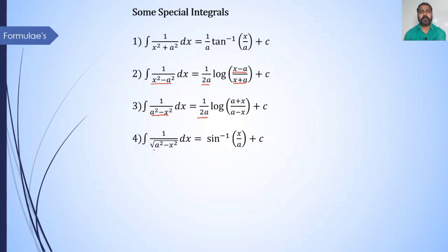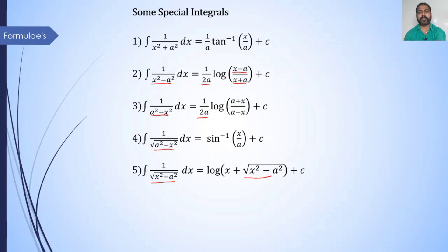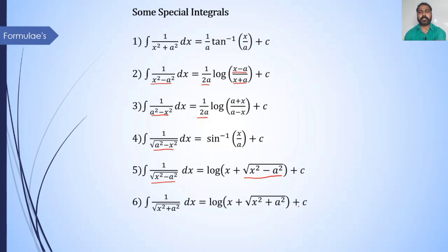Fourth formula: integration of 1 upon root of a² minus x² dx is equal to sin inverse of x divided by a, plus c. Fifth formula: integration of 1 upon root of x² minus a² dx is equal to log of x plus root of x² minus a², plus c. Or simply remember it as log of x plus the denominator term, plus c.